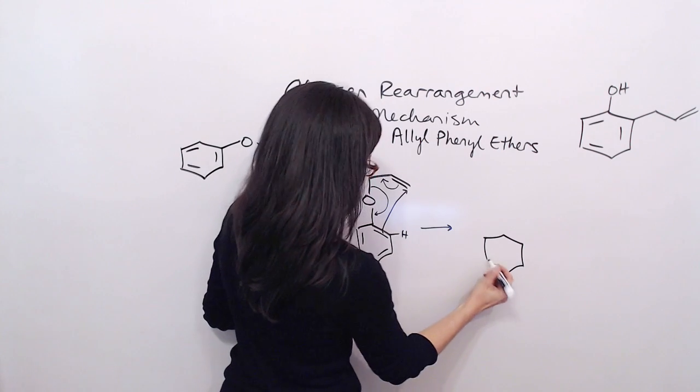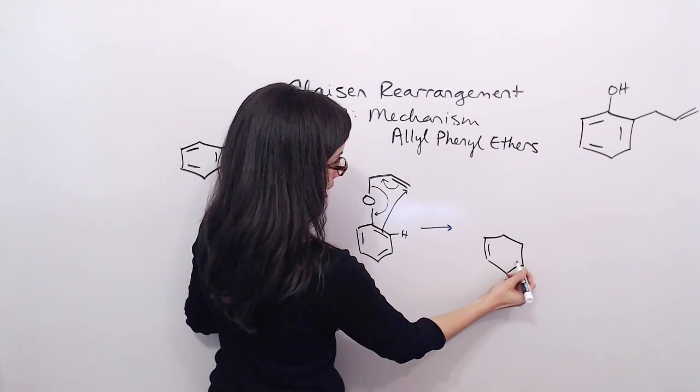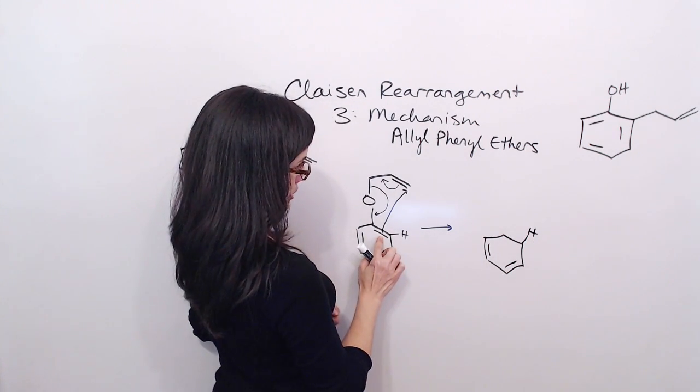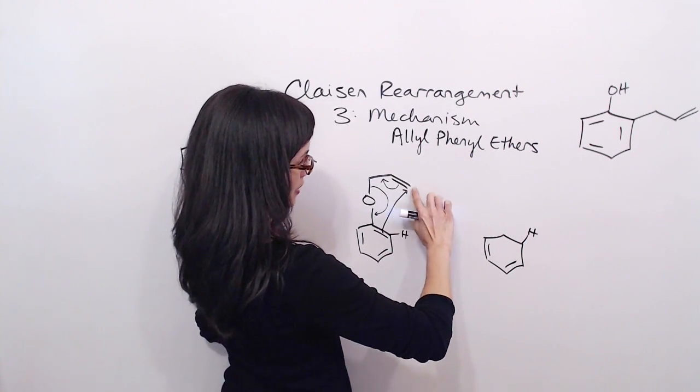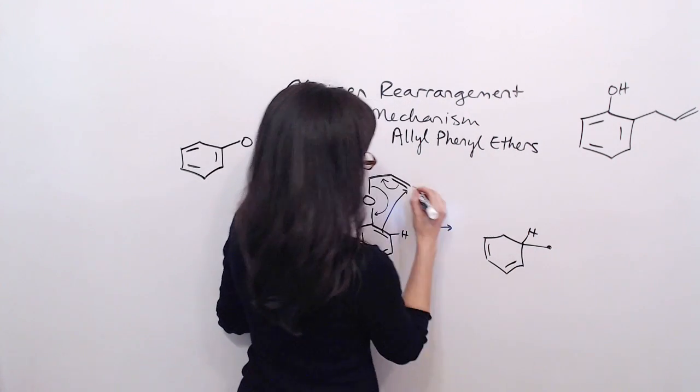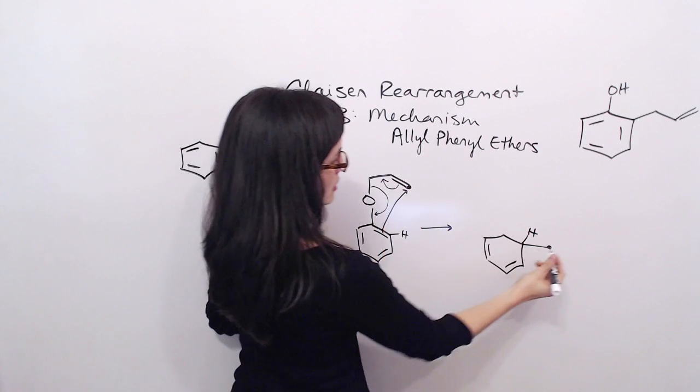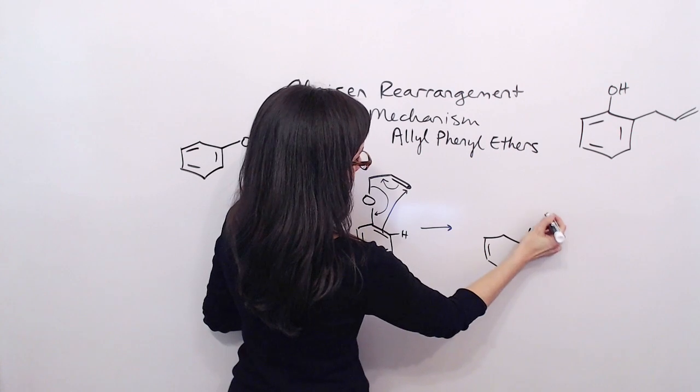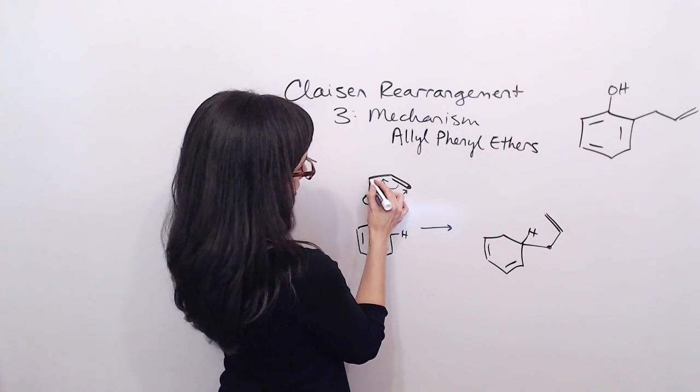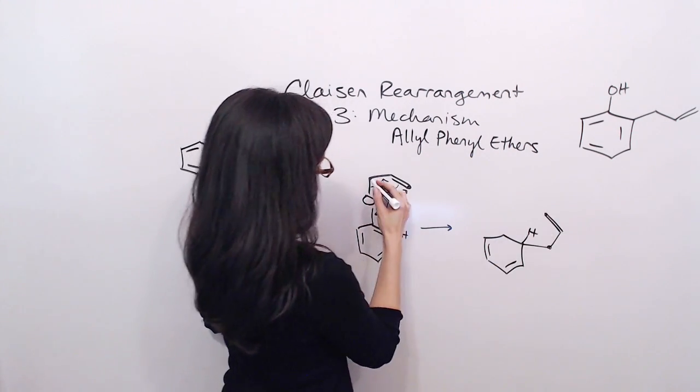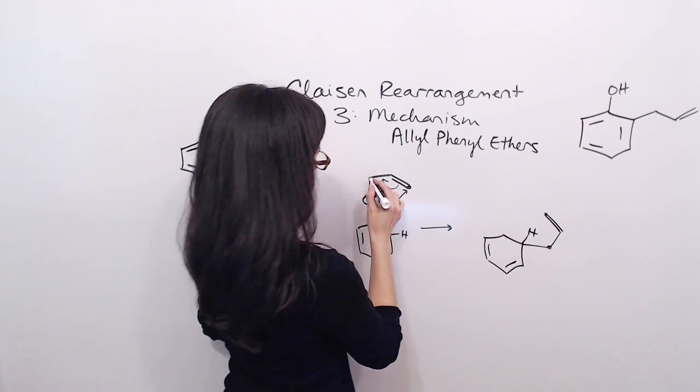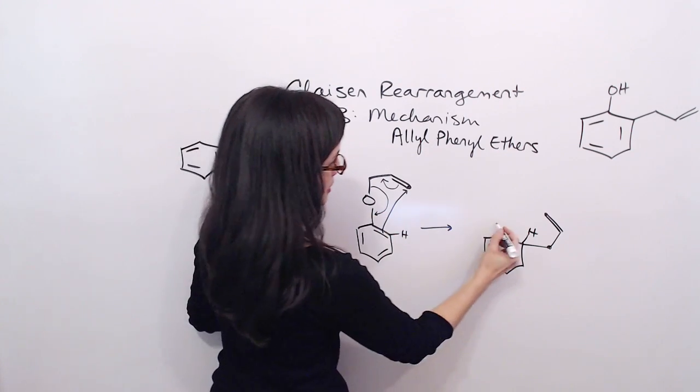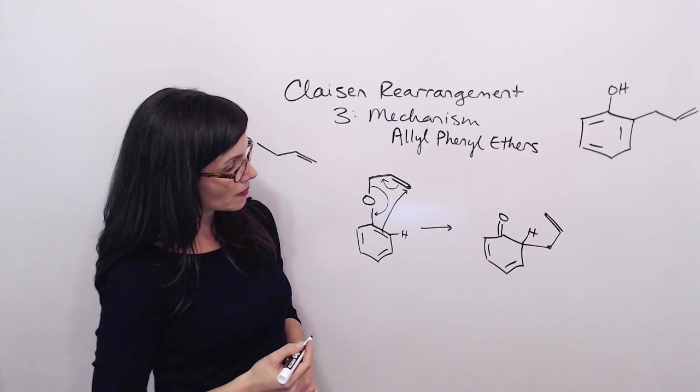So here's our ring. Neither of these bonds have changed. Hydrogen is still here. But now, this bond is no longer double, because these electrons have gone out to bind to this carbon right here. And this bond is no longer double. It's single. But now we have a double bond here. And then this carbon is no longer bound to O. This is the end of the chain. And then looking at O, it is now double bond to carbon.